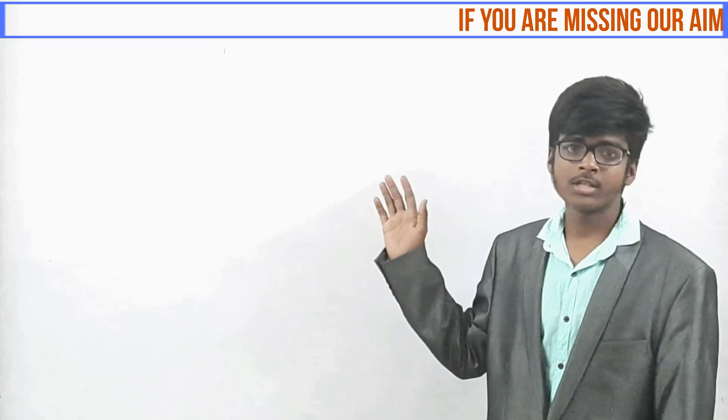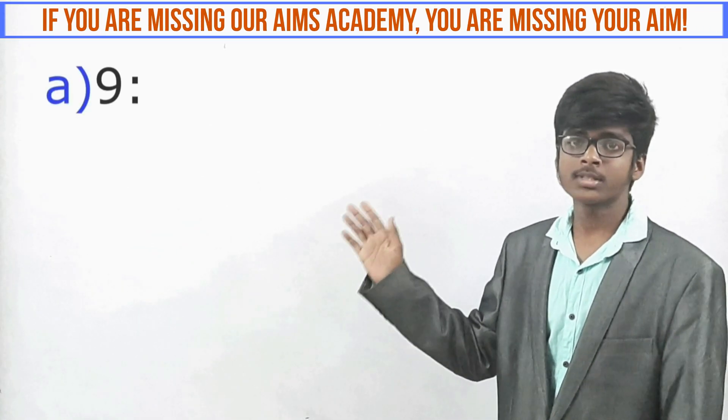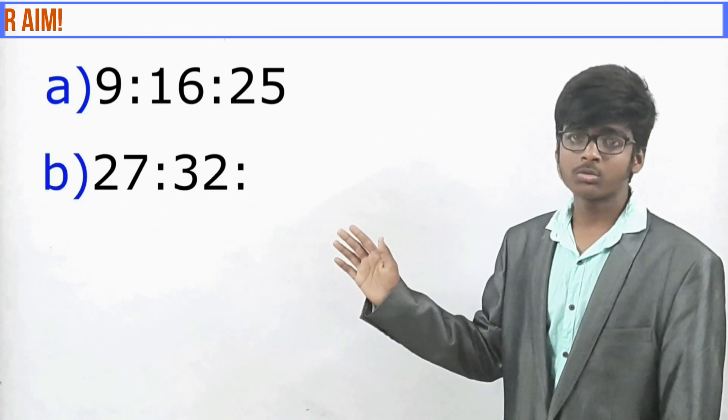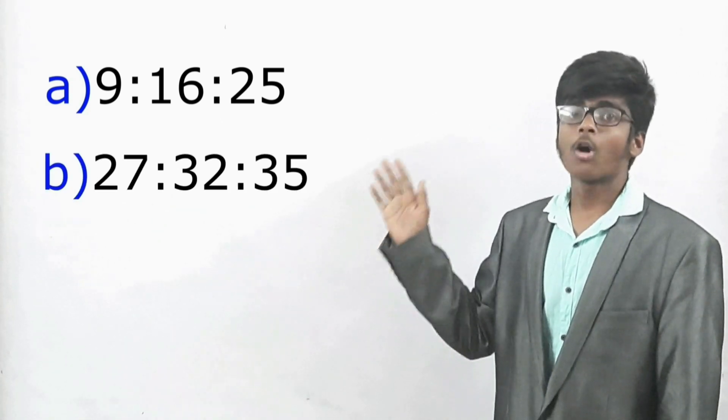The options to these questions are Option A: 9:16:25, Option B: 27:32:35, Option C: 21:24:25, Option D: 3:4:5.